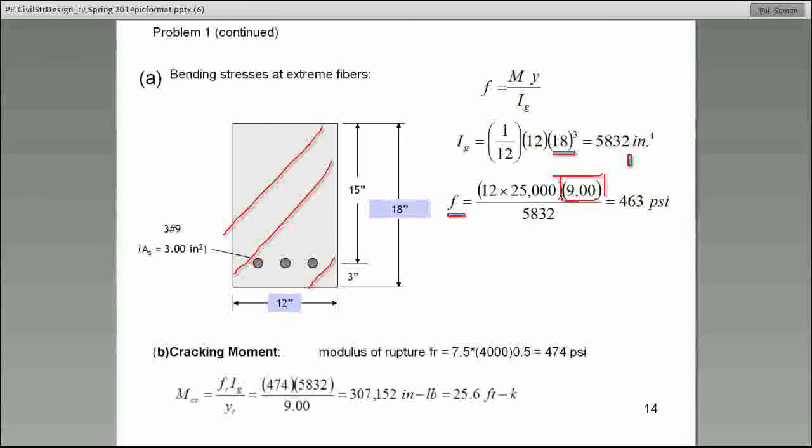This 12, this is a conversion factor. I multiplied the 25 by 12, now it's inch-kips, and then I multiplied by another 1,000, now it's inch-pounds, because this Y is in inches, nine inches, and the moment of inertia in the bottom, that is inch to the fourth. So, we made it compatible, so the answer comes out to be 463 PSI. So, pay close attention to those conversions.